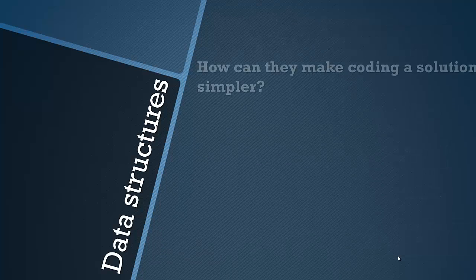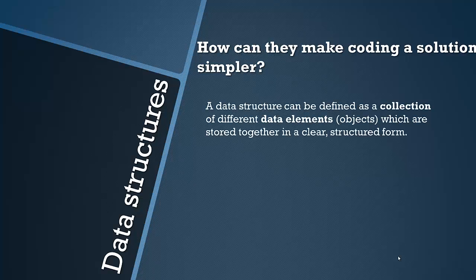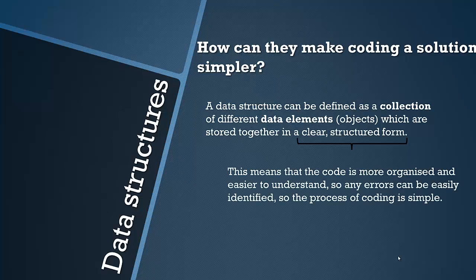So finally we're going to look at how data structures can simplify coding a solution. Let's have a look at the definition again. The most important bit is the fact that the data elements are stored in a clear structured form, and this makes it simpler because the code is more organized and easier to understand. So any errors can be easily identified, and we're looking at different types of errors in a future video. But errors are hard to spot and very time consuming, so when they are made easier to spot, the process of coding is simpler.